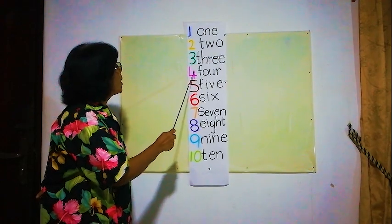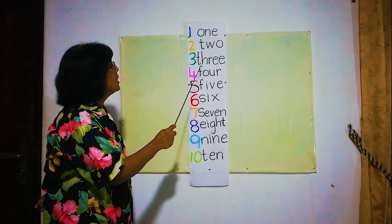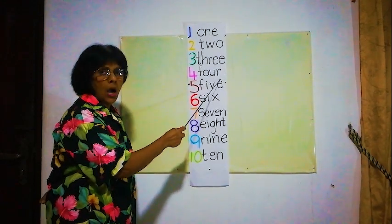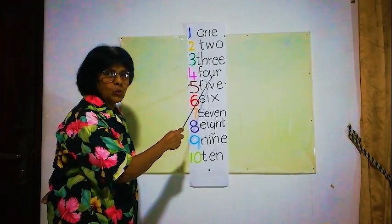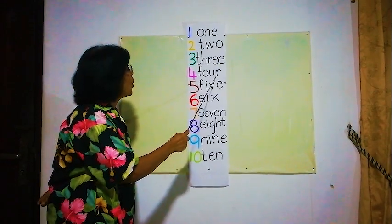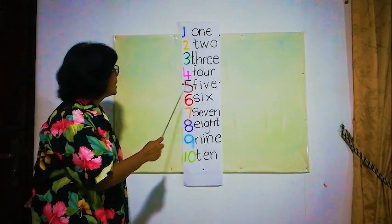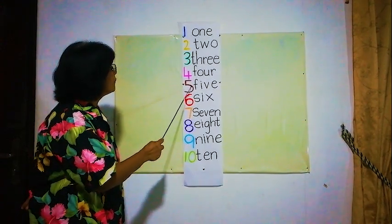Now next one number 4. How do you spell 4? F, O, U, R. F, O, U, R, 4. F, O, U, R, 4.